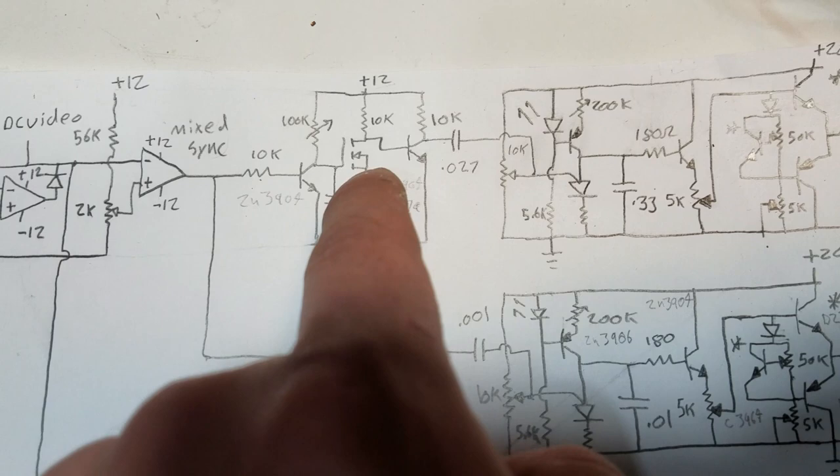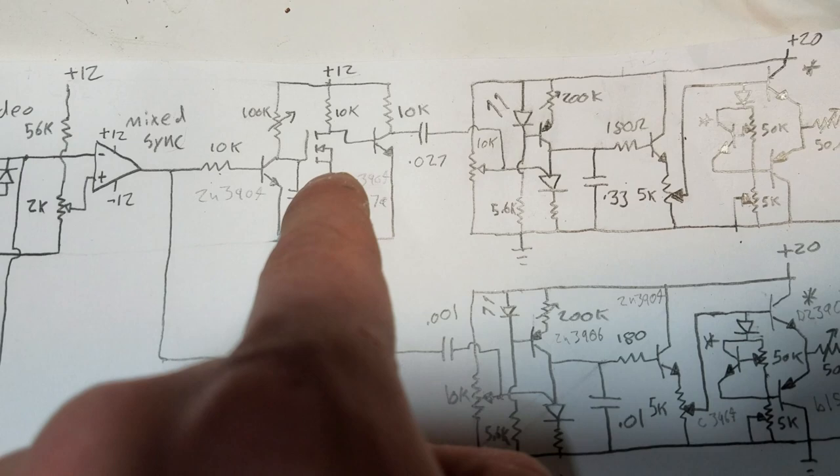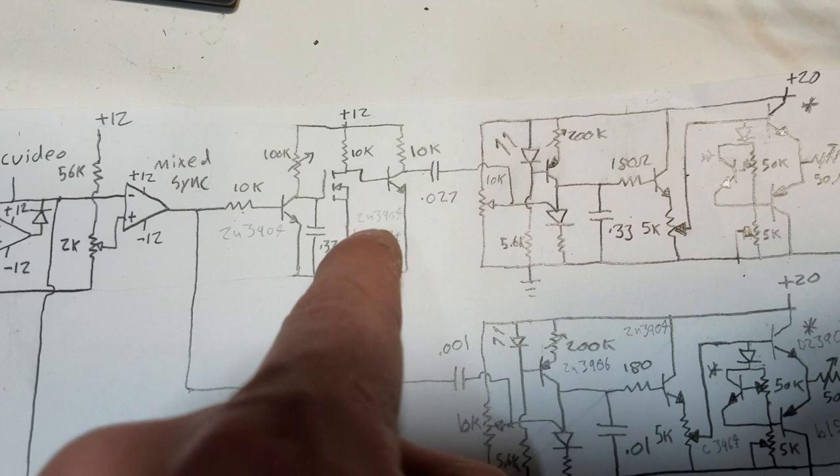That will give us a downward-going pulse right here, but we need an upward-going pulse in order to synchronize. So we have another transistor here acting as an inverter to give us our frame sync pulse. Let's hook onto there and see what those signals look like.